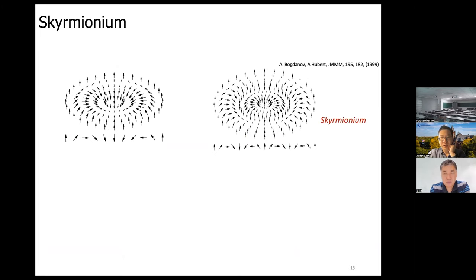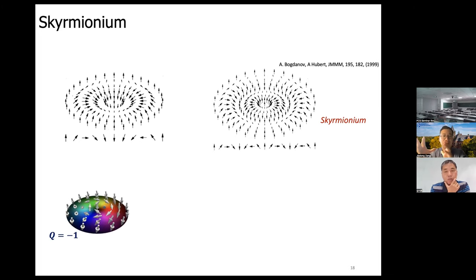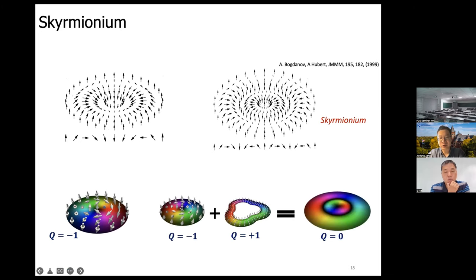Now I will talk about the skyrmion family. There is an early theoretical prediction by Bogdanov that predicted not only the conventional skyrmion but also a configuration called a skyrmionium, in which the spin rotates from center to periphery by an angle of 2π — in contrast to the π rotation in a conventional skyrmion. In a color plot, the skyrmion appears as a colorful disc and the skyrmionium looks like a disc wrapped by a circle of helical stripe.